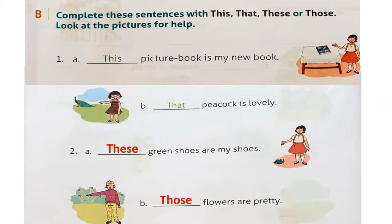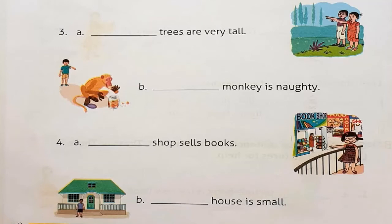Third one — blank trees are very tall. The children are pointing to the trees that are very far from them, so the answer is 'those'. Next — blank monkey is naughty. There is only one monkey and it is far away from the boy, so it has to be 'that'. Fourth one — blank shop sells books. This girl is far away from the shop, so it has to be 'that'. Blank house is small — the house is just behind him, so it has to be 'this'. This house is small.